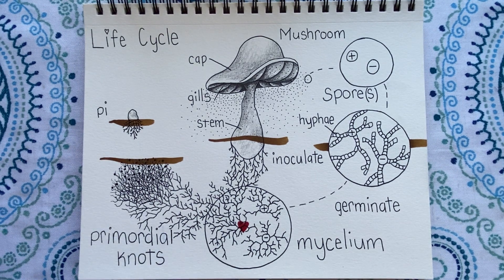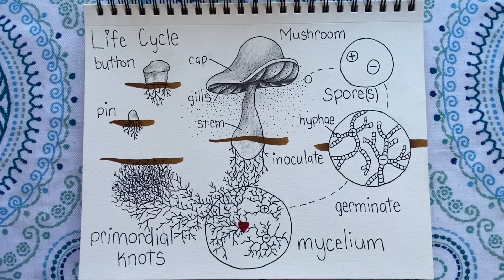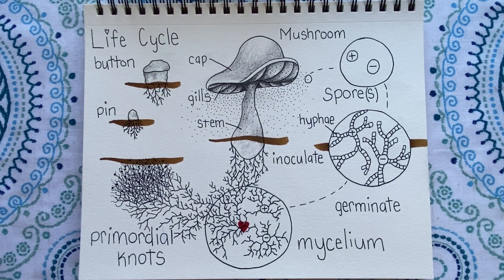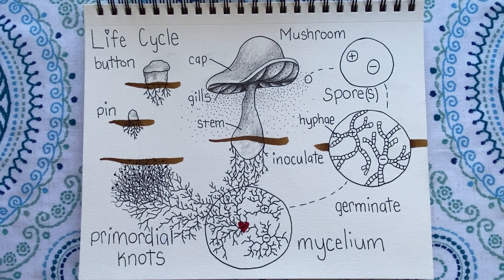At this point, it is called a pin or a pinhead. As the stem and cap become distinct from each other and form their own shapes, we call this a button. The mushroom matures and creates thousands of spores. And finally, when the mushroom is ready, the cap extends and breaks the veil, releasing the spores, beginning the life cycle over again.